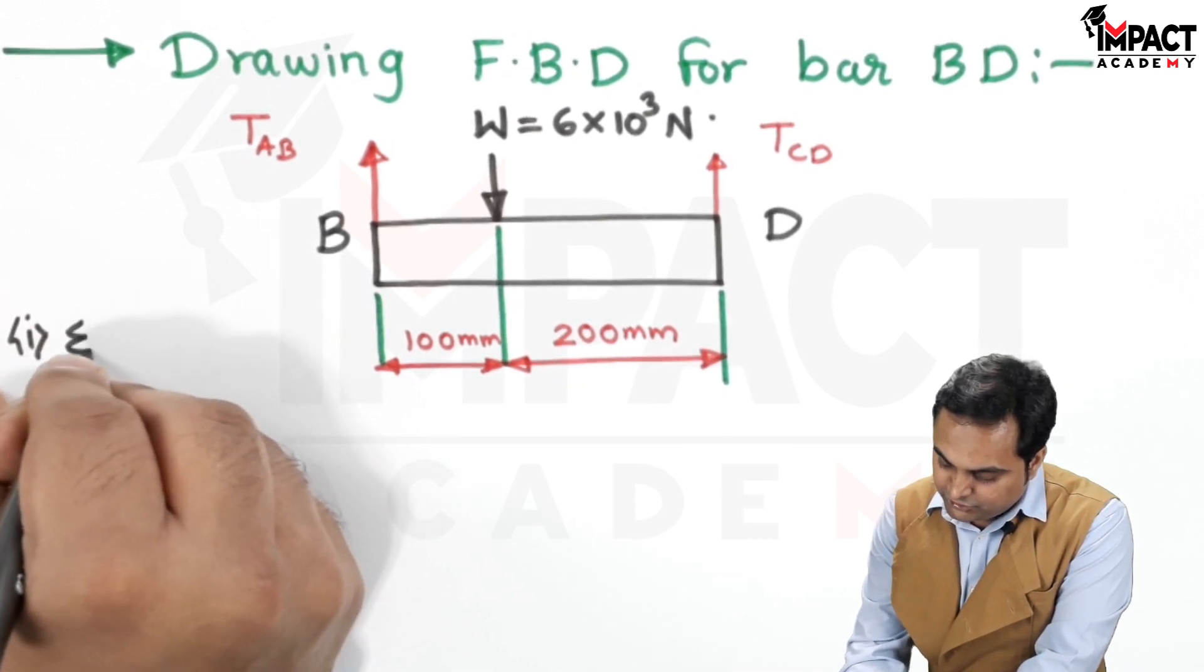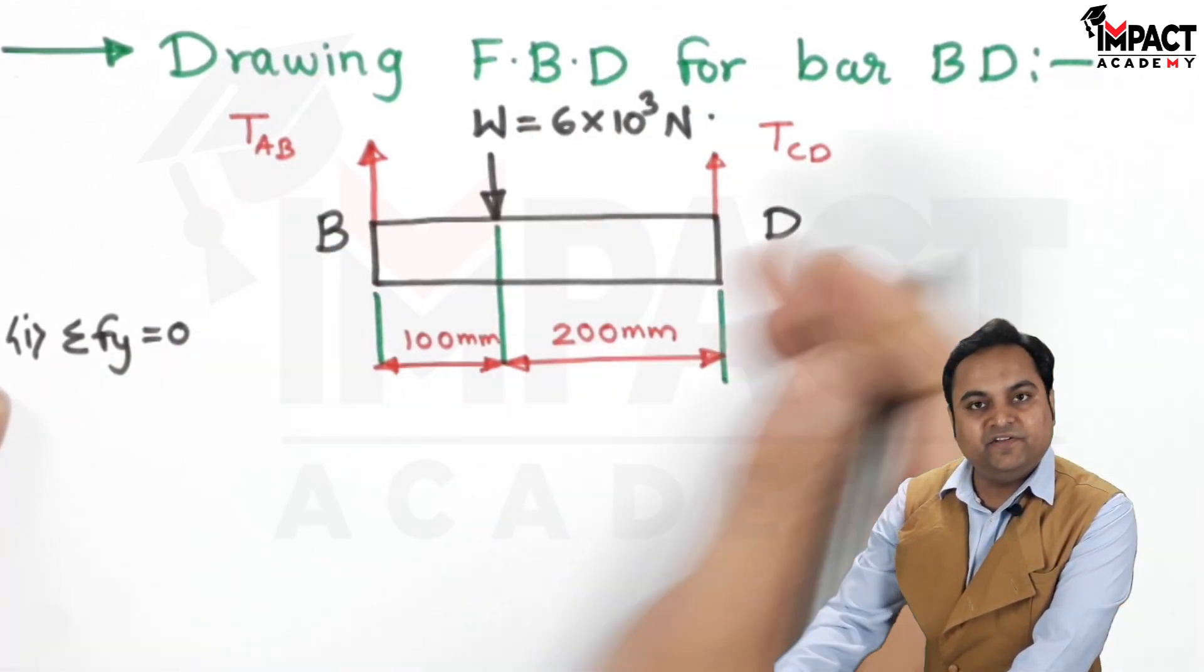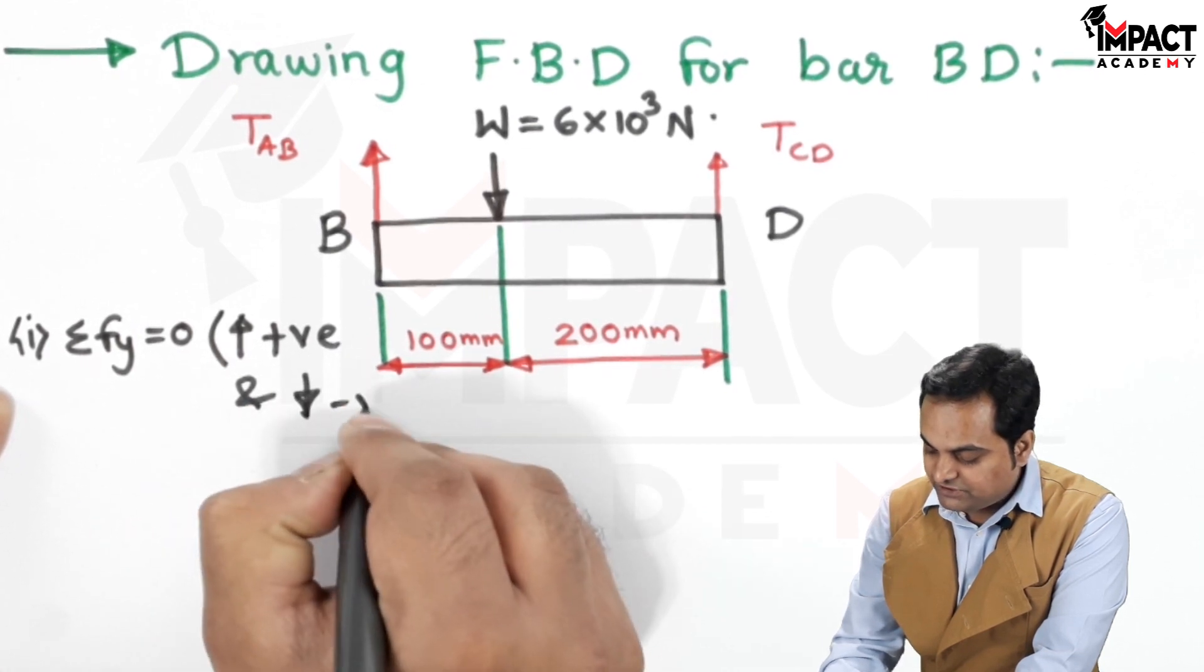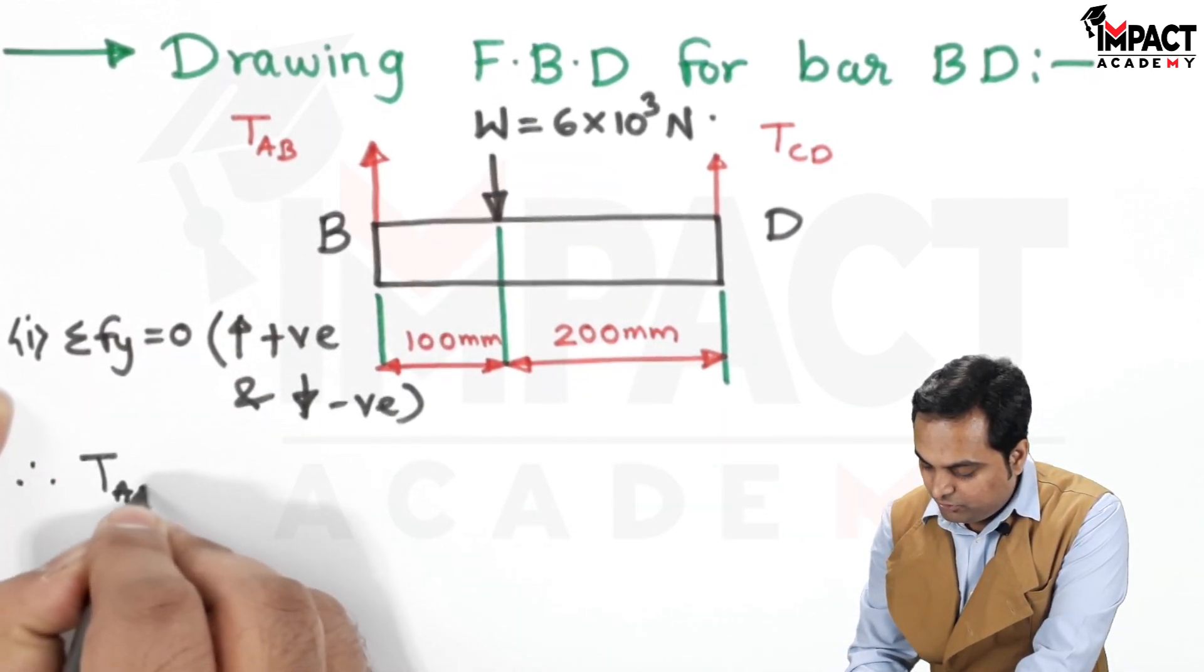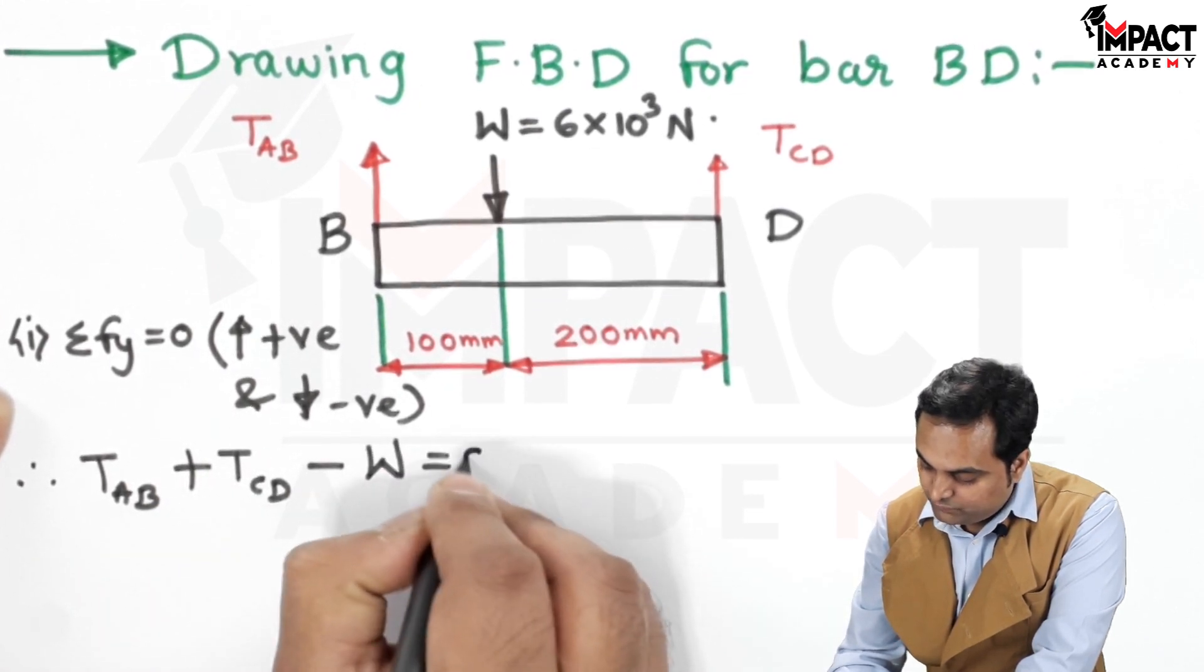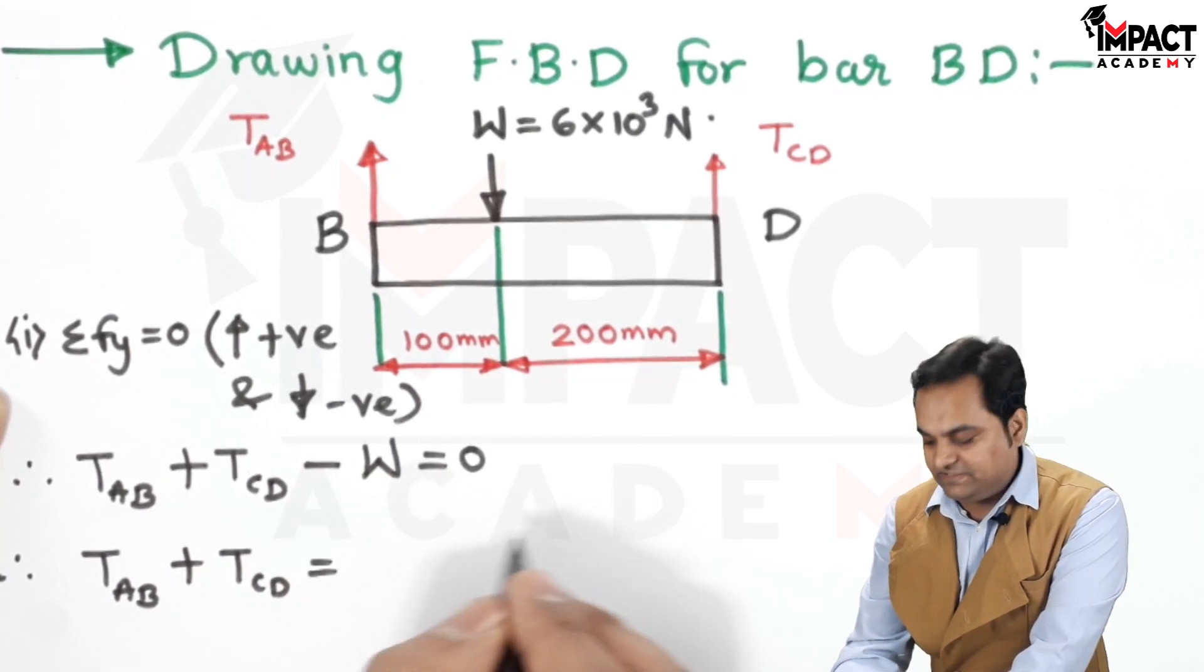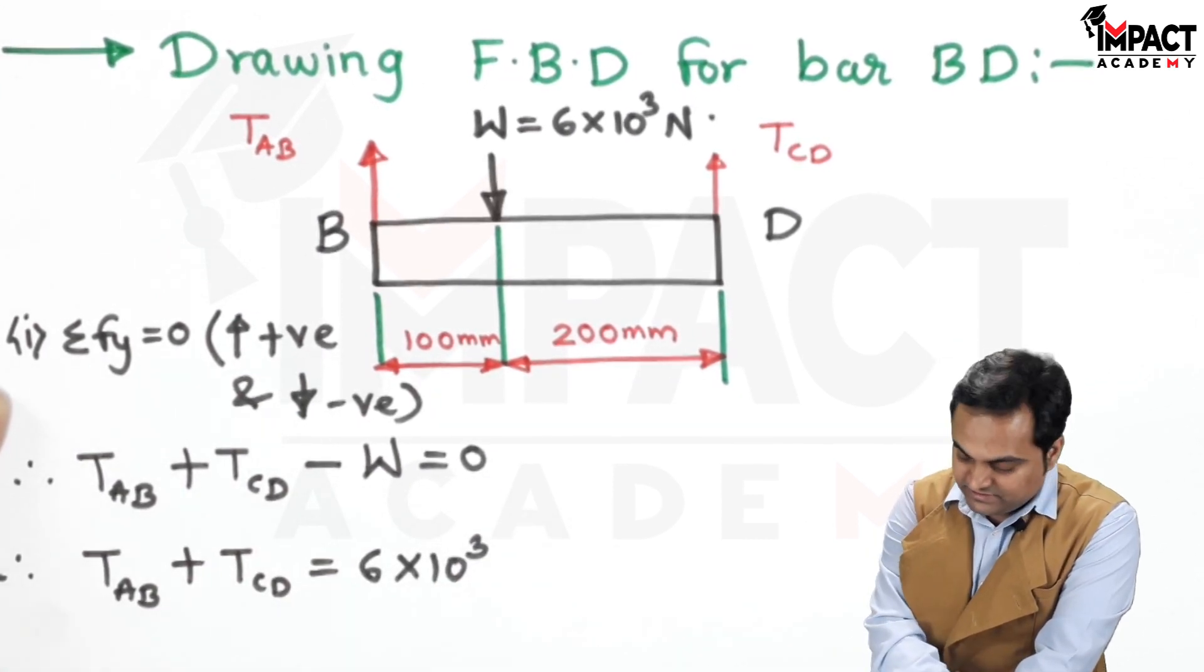So the first condition is summation of Fy is equal to 0. That is the addition of all vertical forces because we are having vertical forces here. And the convention is whatever the forces which are there in upward direction are positive. And those which are there into the downward direction are treated as negative. Therefore, we have TAB which is the tension in string AB or the force plus TCD minus W is equal to 0. Therefore, TAB plus TCD minus W when it goes on to the right side, it would be plus W and the value is 6 into 10 raise to 3 newton. I will keep this as the first equation.